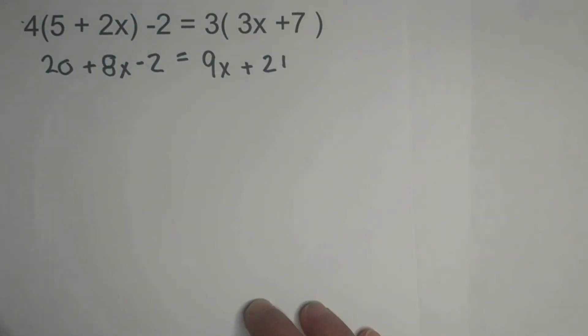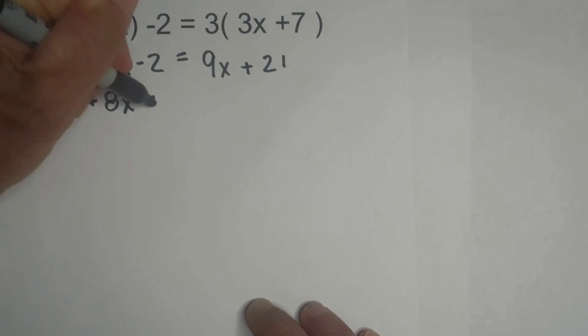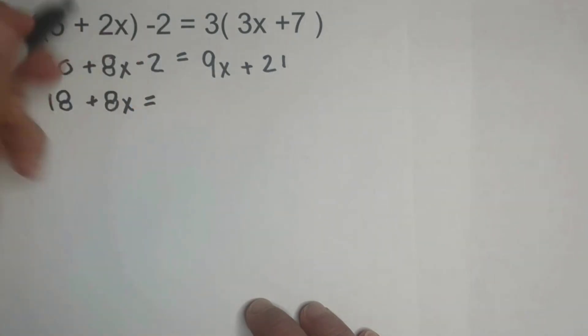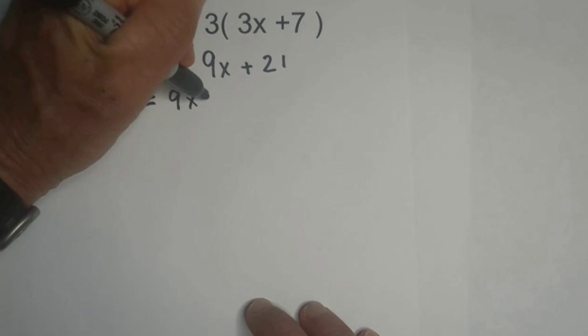Now can we combine like terms? Well, we can combine on the left the 20 and the negative 2. That becomes 18, because 20 minus 2 is 18, plus 8x equals, and there's nothing on the right that we can combine, so we'll just bring it down.